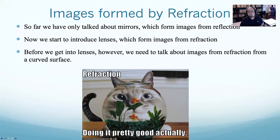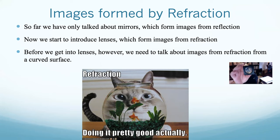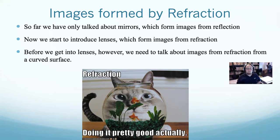That was all mirrors. For the rest of today we're going to talk about lenses instead. Lenses make images through refraction — if I hold a lens between you and the camera, we can get an image that is upside down and smaller, just bending and directing the light. Before we get into lenses, let's talk about images from refraction in general, especially from a curved surface.